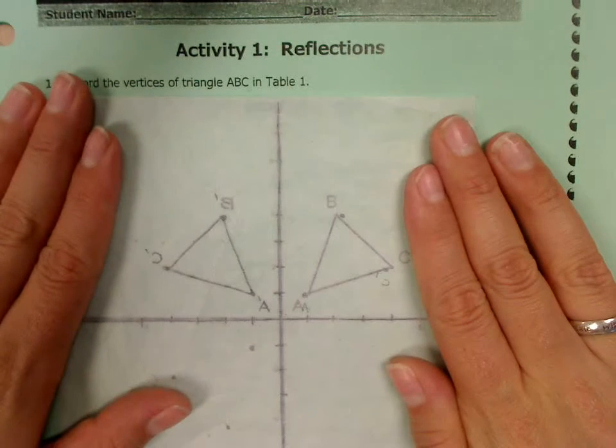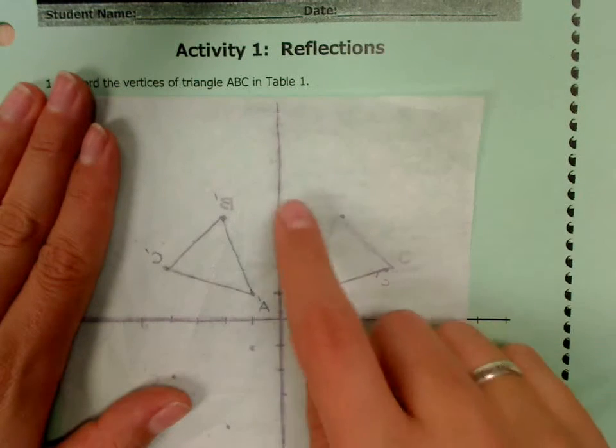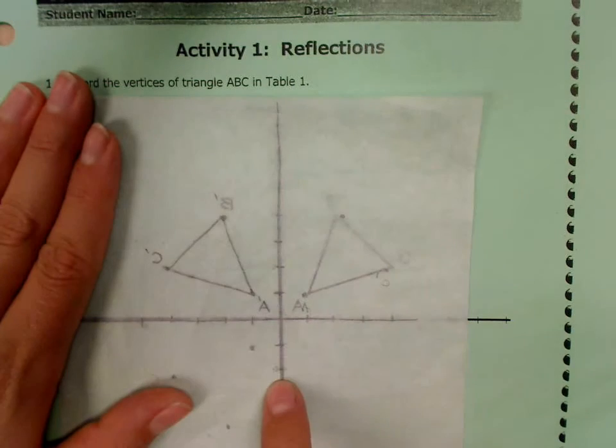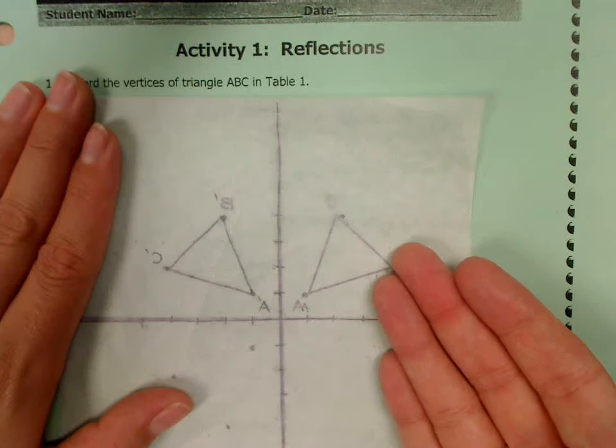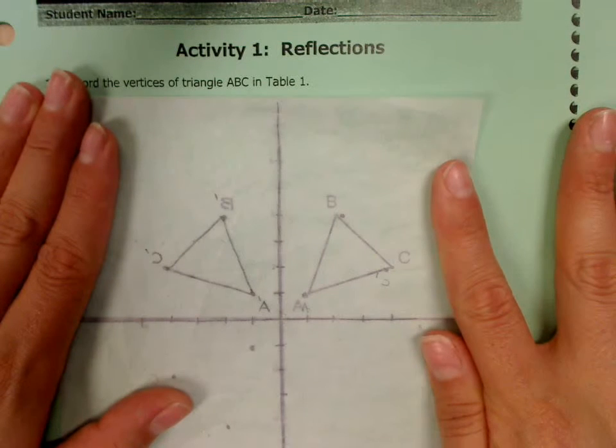And you'll notice that you have a very nice reflection, which means that the y-axis is kind of acting like a line of symmetry where on one side you have this triangle and on the other side you have the exact same triangle, a perfect little reflection.